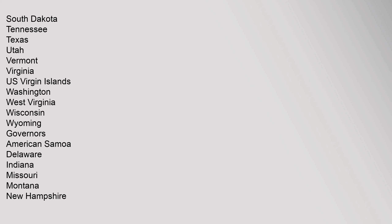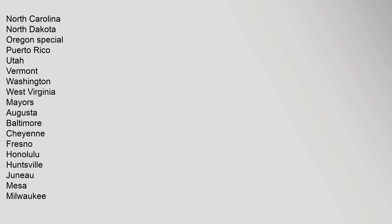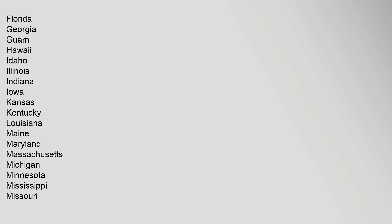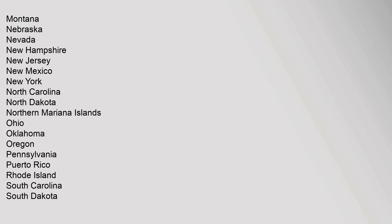Governors: American Samoa, Delaware, Indiana, Missouri, Montana, New Hampshire, North Carolina, North Dakota, Oregon (special), Puerto Rico, Utah, Vermont, Washington, West Virginia. Mayors: Augusta, Baltimore, Cheyenne, Fresno, Honolulu, Huntsville, Juneau, Mesa, Milwaukee, Portland, Richmond, Sacramento, San Diego, San Juan, Scottsdale, Virginia Beach, Wilmington. States legislatures: Alabama, Alaska, American Samoa, Arizona, Arkansas, California, Colorado, Connecticut, Delaware, Florida, Georgia, Guam, Hawaii, Idaho, Illinois, Indiana, Iowa, Kansas, Kentucky, Louisiana, Maine, Maryland, Massachusetts, Michigan, Minnesota, Mississippi, Missouri, Montana, Nebraska, Nevada, New Hampshire, New Jersey, New Mexico, New York, North Carolina, North Dakota, Northern Mariana Islands, Ohio, Oklahoma, Oregon, Pennsylvania, Puerto Rico, Rhode Island, South Carolina, South Dakota, Tennessee, Texas, Utah, Vermont, Virginia, U.S. Virgin Islands, Washington, West Virginia, Wisconsin, Wyoming.